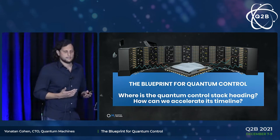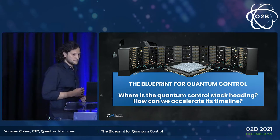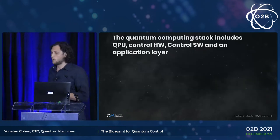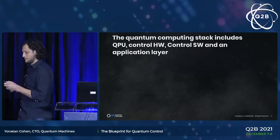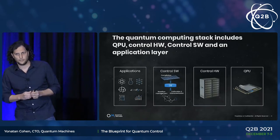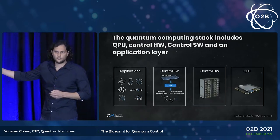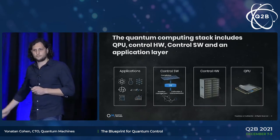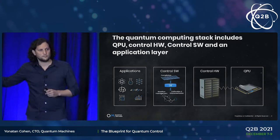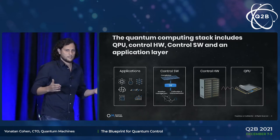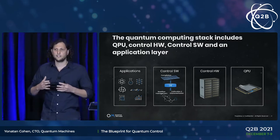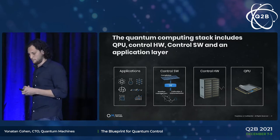In order to make this vision a reality, the quantum control stack includes four different layers: we have the quantum processors or the QPUs, then we have the control hardware, the control software, and then of course the application layer, which also includes the higher level programming and development tools.